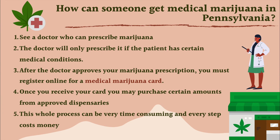The first step is you have to see a doctor who can prescribe marijuana. Not all doctors can do this — there are specific doctors listed on the Pennsylvania state website, and there are only a few. You have to find that specific doctor and get an appointment. That doctor will only prescribe it if you have certain qualifying medical conditions, such as seizures, anxiety, or certain cancers — there's a full list online.